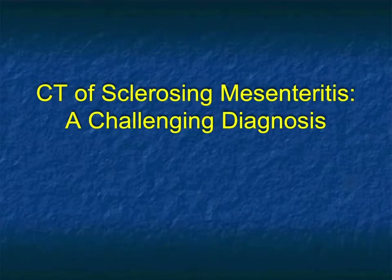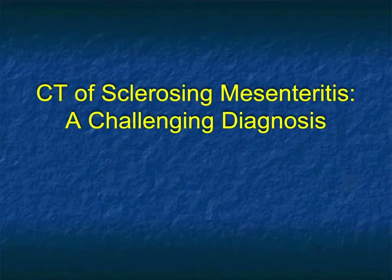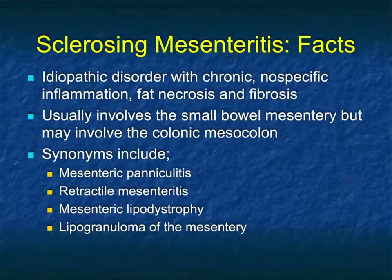This is Elliot Fishman and welcome to our latest vodcast. This is going to be on a challenging topic — sclerosing mesenteritis, which is often a very difficult diagnosis and can be confused with many things. The primary differential diagnosis is sclerosing mesenteritis versus a carcinoid tumor, but there are other possibilities.